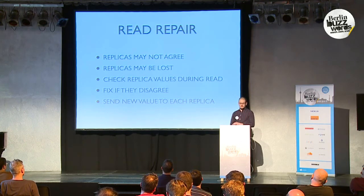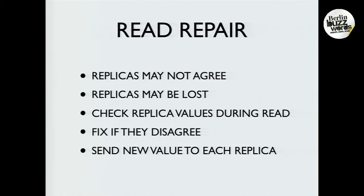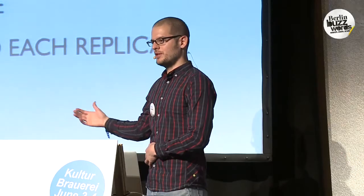So, read repair. There's a chance that all your replicas might not agree — you could lose disk, a put to one of the remote partitions got dropped, a seg fault happened at just the right time. For whatever reason, there can be divergence. The idea behind read repair is: when you do a read, you always go to all N. Your R might be two, but the coordinator will wait around longer for all three values and check — do you guys agree? If not, I'm going to fix you and send you back. Read repair takes advantage of the fact that you already paid the cost of the IOPS to get that data back — you might as well check that it's consistent.